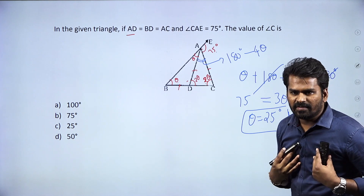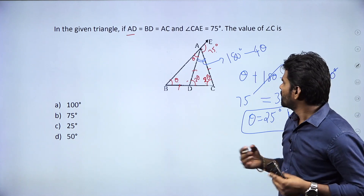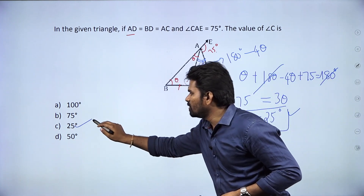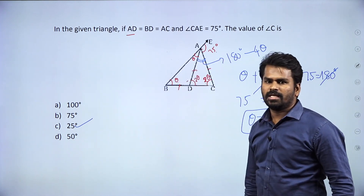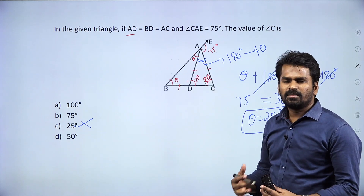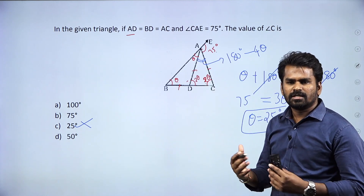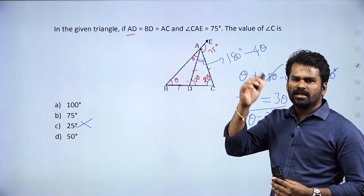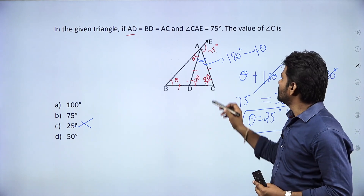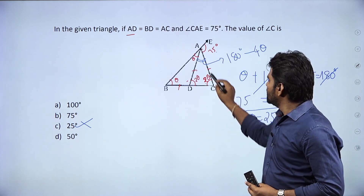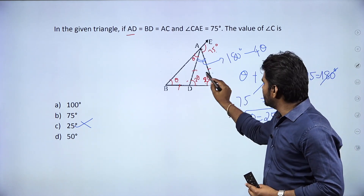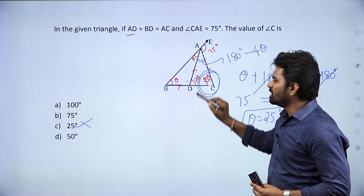So theta equals 25 degrees. Therefore, angle C equals 2 theta, which is 2 times 25, giving angle C equals 50 degrees.